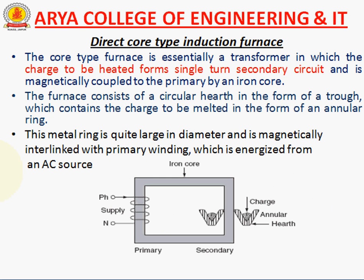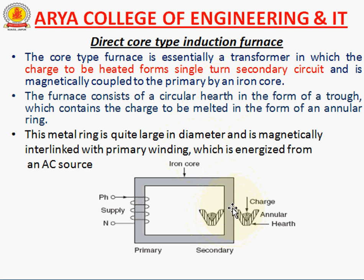Now we are going to types of induction heating. First of all, direct core type induction heating. In this heating, there are two windings: primary winding and secondary winding, connected such as like a transformer. The core type furnace is essentially a transformer in which the charge to be heated forms a single-turn secondary circuit, magnetically coupled to the primary by an iron core.